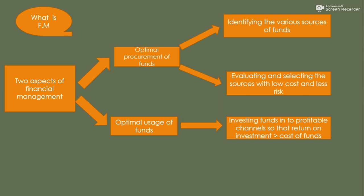The second aspect is optimum uses of funds. Ab identify kar liya source ko, source ko identify karne ke baad, usmein se best source ek ya do, jitne bhi source hain, hamne select kar liye. Ab select karne ke baad aapke paas funds aa gaye hain. Ab jo funds aaye hain, to financial management ka next aspect hai ki optimum uses of funds — un funds ka proper use hona chahiye. Kyunki agar business mein paisa to hai, lekin hum paise ka proper use hi nahi kar rahe hain, to woh hume profit nahi dega.